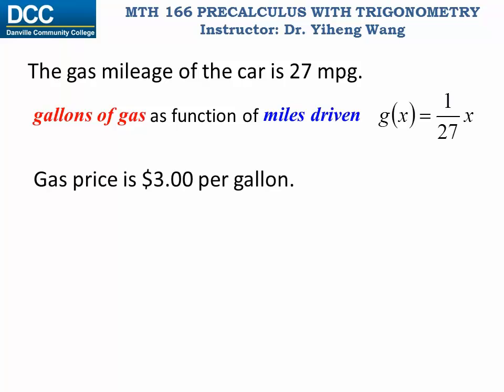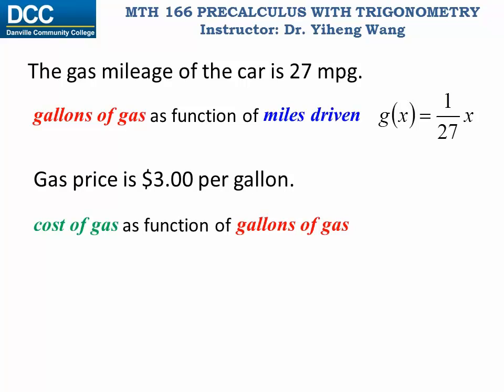If gas price is $3 per gallon, based on this relation we can write a separate function: cost of gas as a function of gallons of gas consumed, f(x) equals 3 times x. Notice how the output of the g(x) function — gallons of gas — becomes the input of the second function.